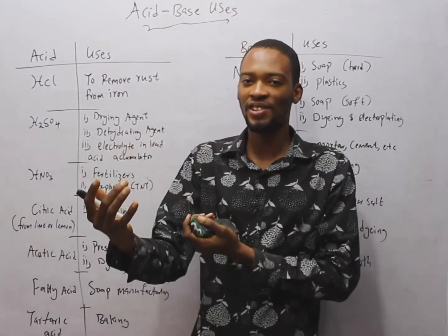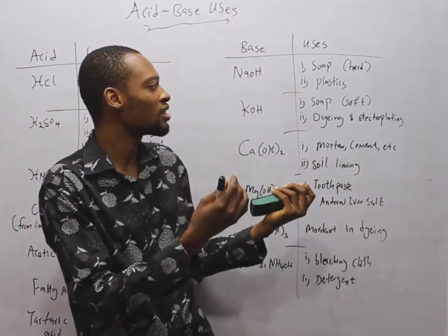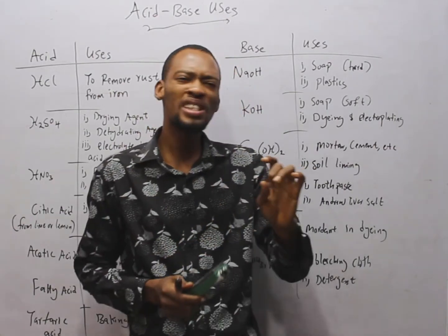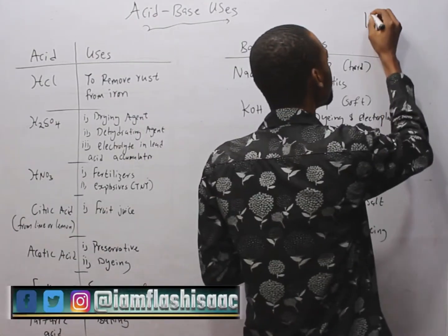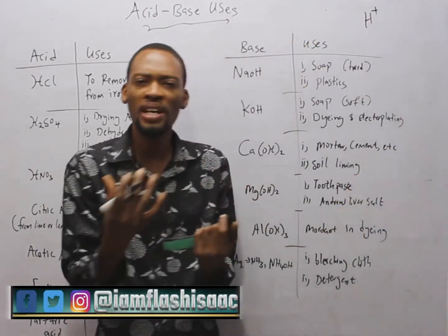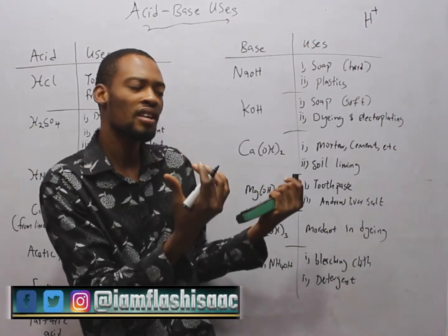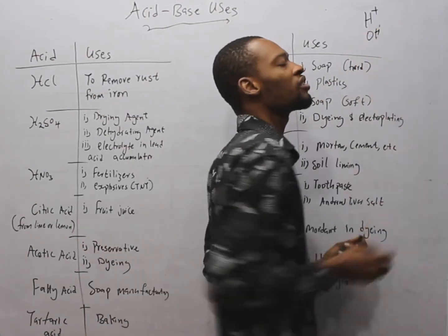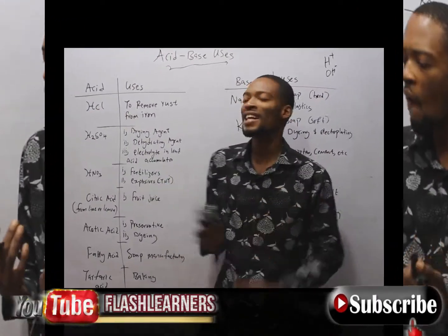According to Arrhenius, an acid is a substance which, when dissolved in water, produces hydrogen ion as the only positive ion. Meanwhile, a base is a substance which, when dissolved in water, produces hydroxide ion as the only negative ion. I am Flash Isaac.